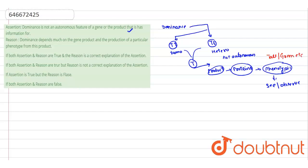The reason is a true statement, and the assertion is also a true statement, and the reason is the correct explanation for this assertion. So if both assertion and reason are true and the reason is the correct explanation of the assertion, the right answer is option one.